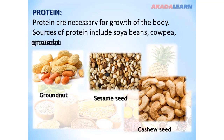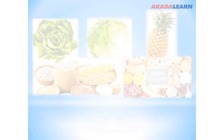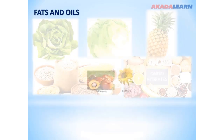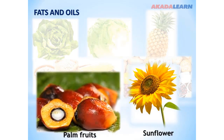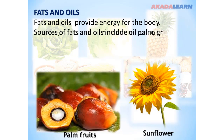Sources of protein include cereals, cowpea, groundnut, sesame seed, cashew seed, and millet. Fats and oils provide energy for the body. Sources of fats and oils include oil palm, groundnut, and sunflower.